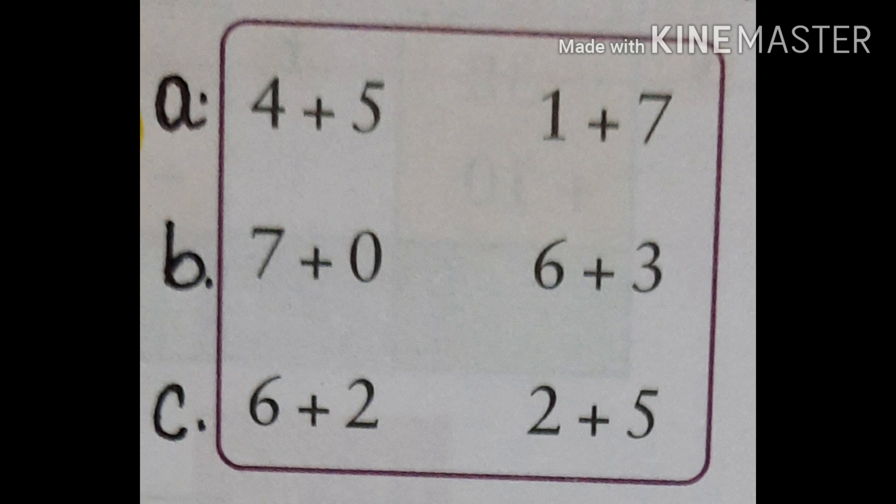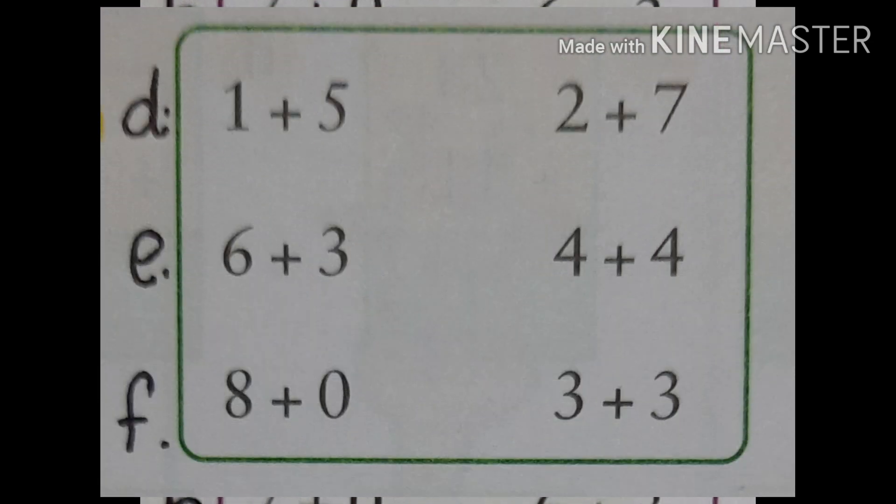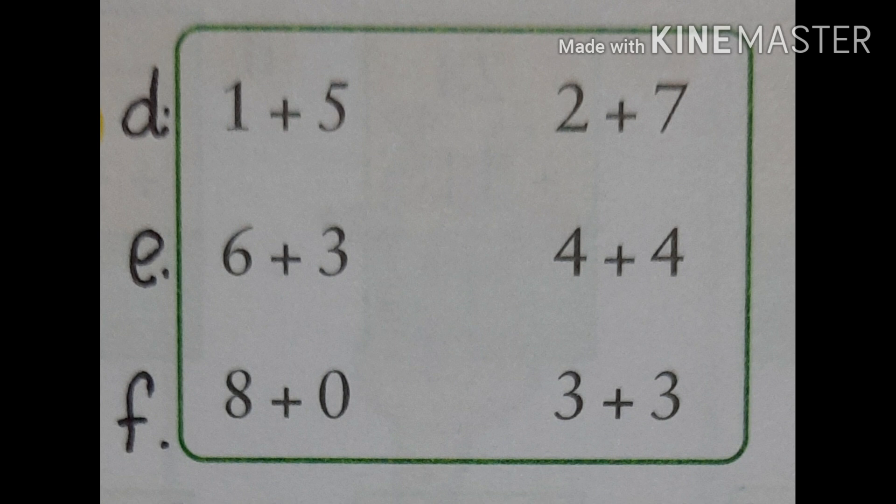Now you have to match with the numbers given in the right hand side. Let us see. Number D, E and F. 1 plus 5, 6 plus 3, 8 plus 0.